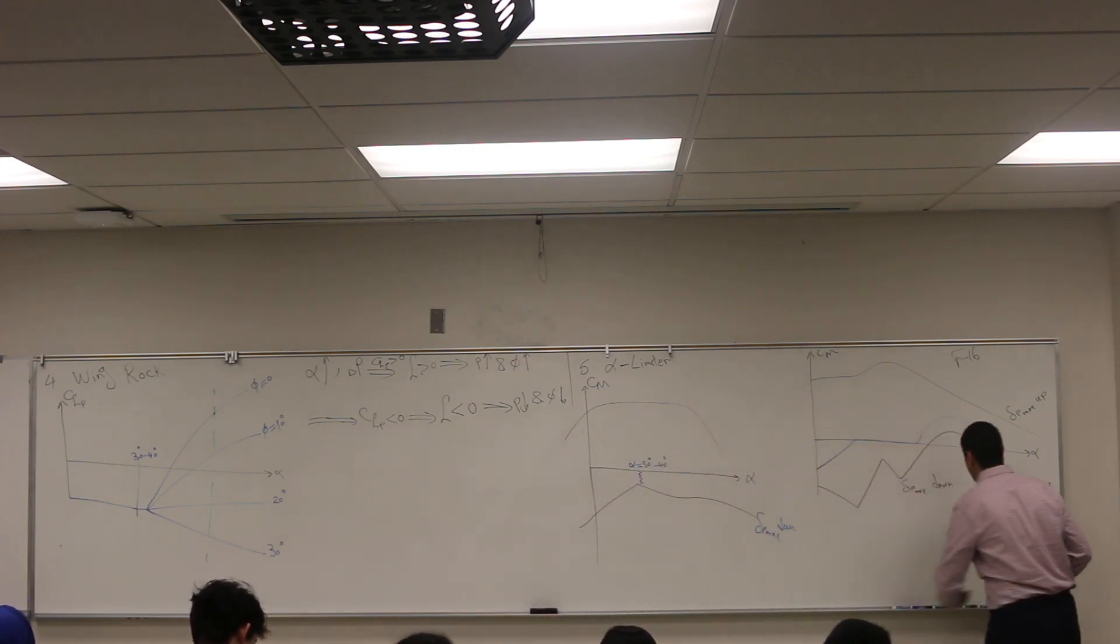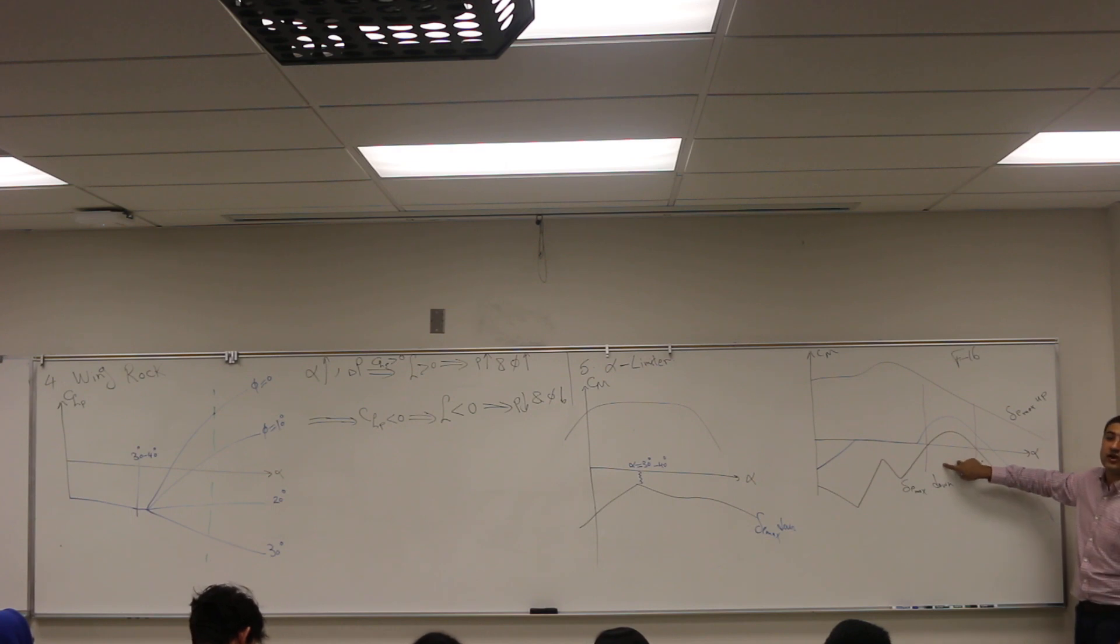But this is not the thing that I want to emphasize today - it's high alpha flight mechanics. Look here. What goes wrong in this range? This is the maximum achievable positive pitching moment, this is supposed to be the maximum achievable negative pitching moment, and the blue is the neutral line with no control.